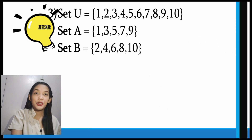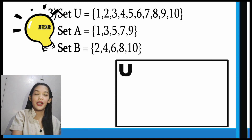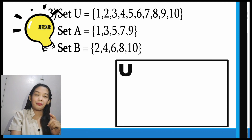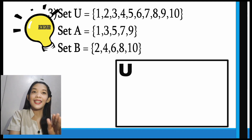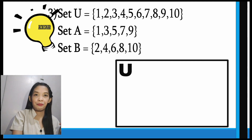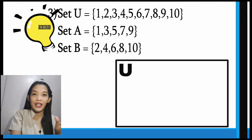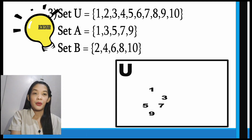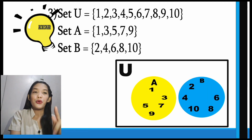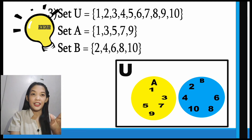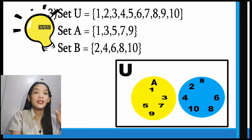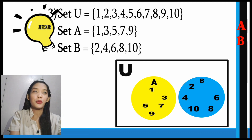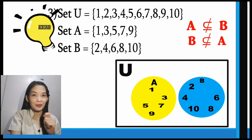Let us have example number 3. Our universal set contains elements 1 to 10. Take a look at set A and set B — are there common elements? Set A has the elements 1, 3, 5, 7, and 9. And set B has the elements 2, 4, 6, 8, and 10. Both sets have completely different elements. Therefore, every element in A cannot be found in B, and every element in B cannot be found in A. So A is not a subset of B and B is not a subset of A.